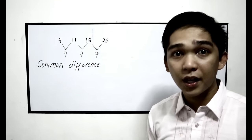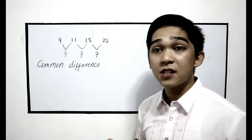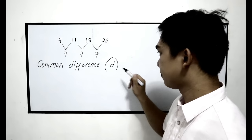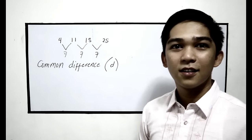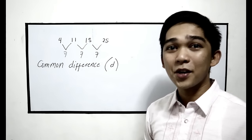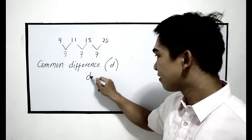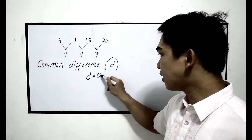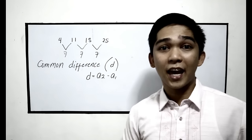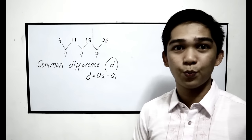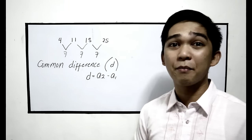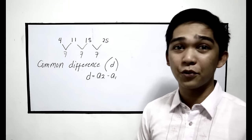The common difference is denoted by the symbol, small letter d. The formula for that is a2 minus a1. Or it can be a3 minus a2, a4 minus a3, or a5 minus a4.